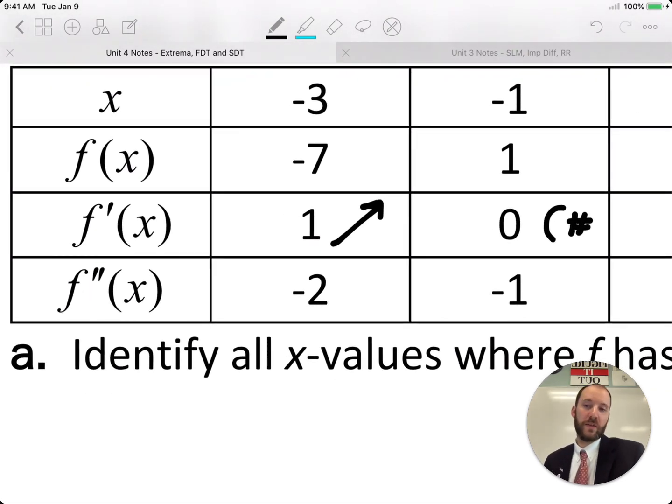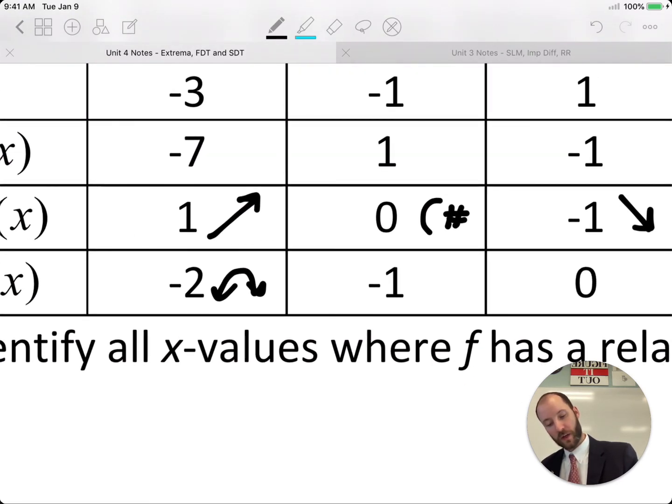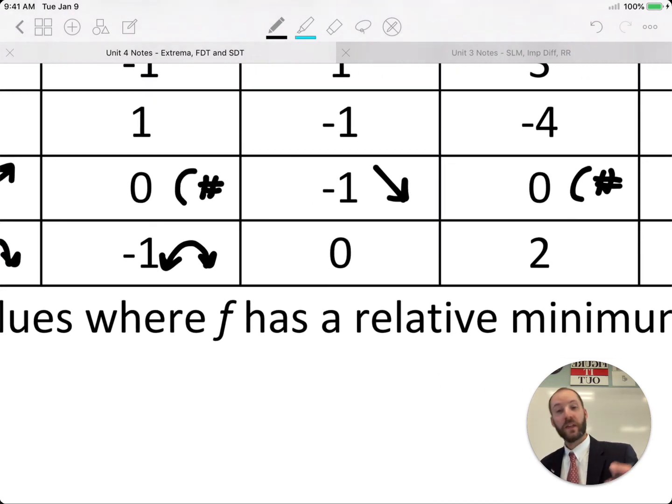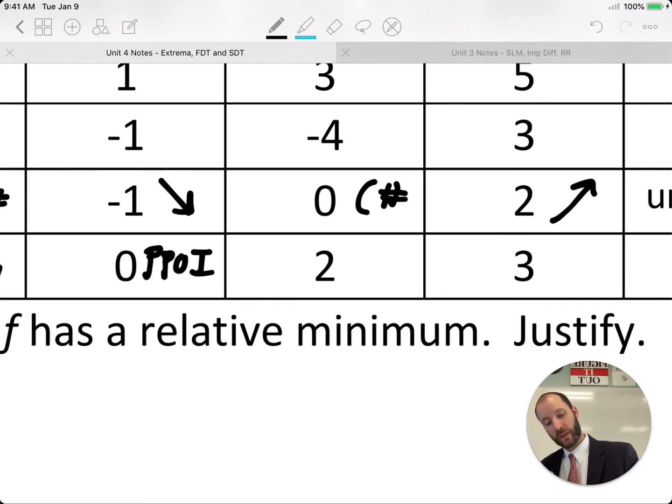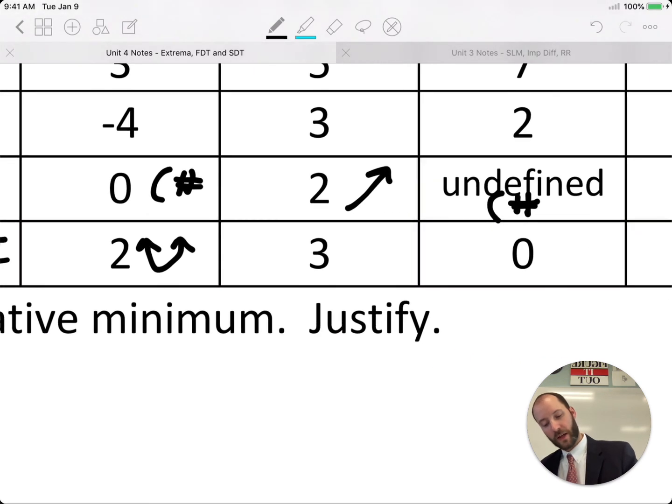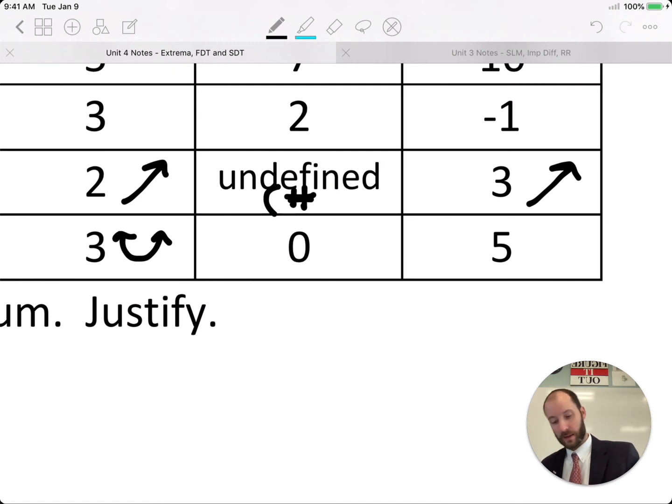Now we'll do the same for the second derivative. Negative 2 is concave down, negative 1 is also concave down. 0 for the second derivative is a possible point of inflection. 2 is concave up, 3 is concave up, 0 again is a possible point of inflection, and 5 is concave up.